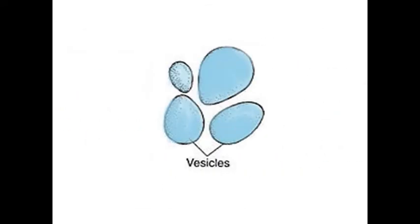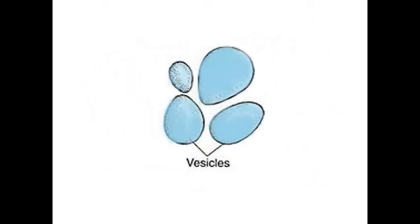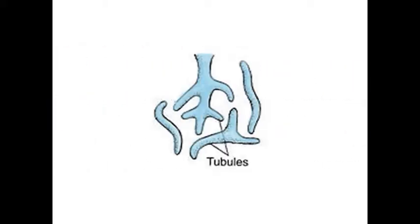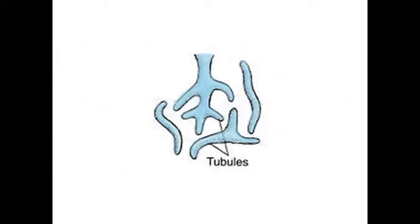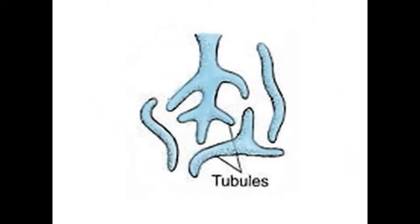Vesicles: they are round and sac-like with a diameter of 27 to 500 micrometers and appear as small backhill-like structures. They are formed isolated in the cytoplasm and are also called microsomes. Tubules: they are much irregular branched structures having a diameter of 50 to 100 micrometers and form a reticular structure with cisternae and vesicles.